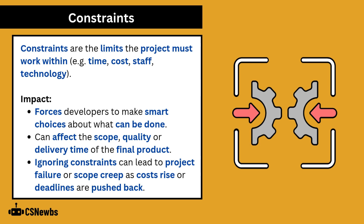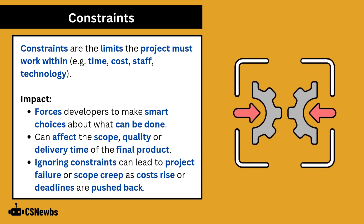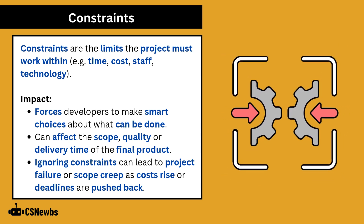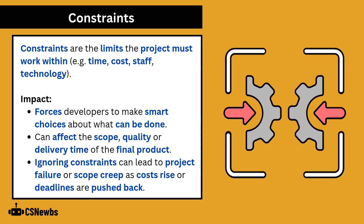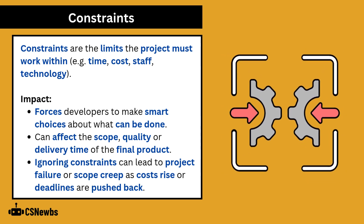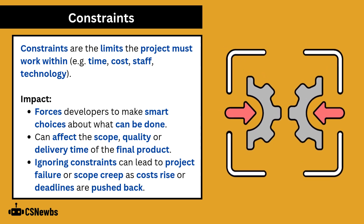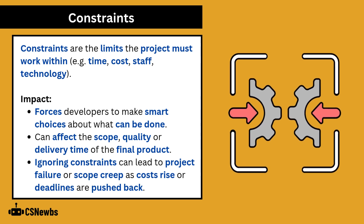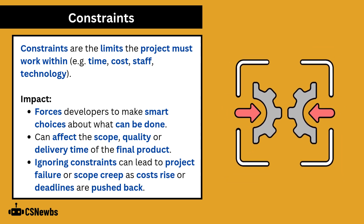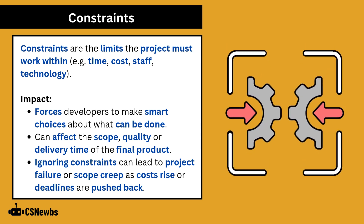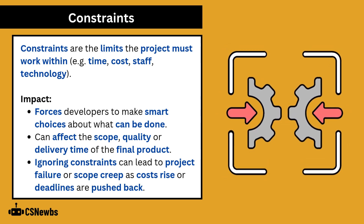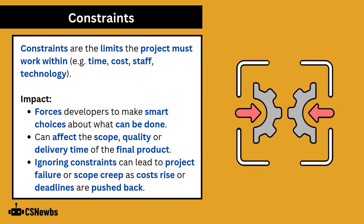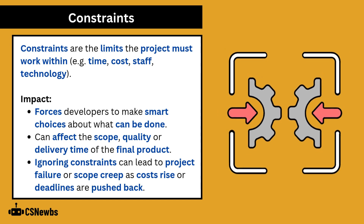Constraints are the limits the project must work within, such as time, cost, staff, and technology. Constraints force developers to make smart choices about what can be done. They can affect the scope, quality, or delivery time of a final product. Ignoring constraints can lead to project failure or scope creep as costs rise or deadlines are pushed back.